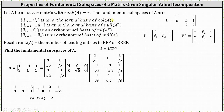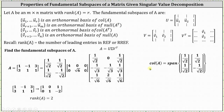Let's begin by determining the column space of matrix A. Notice how if we write matrix A in reduced row echelon form, there are two leading entries, which indicates the rank of A is equal to two. Therefore R equals two, which means the set containing the vectors U sub one and U sub two is an orthonormal basis for the column space of A. The U vectors are from the columns of matrix U, which is the first matrix. Notice how matrix U only has two columns, so these two columns form an orthonormal basis for the column space of A. The column space of A is equal to the span of the set containing these two vectors, which are orthonormal — unit vectors that are also orthogonal or perpendicular.